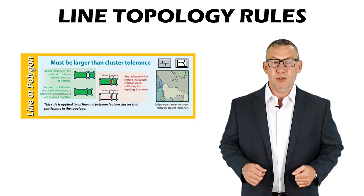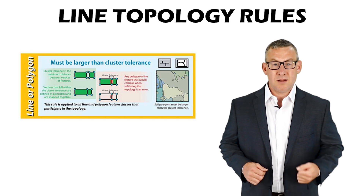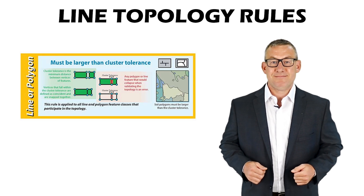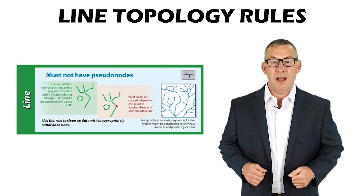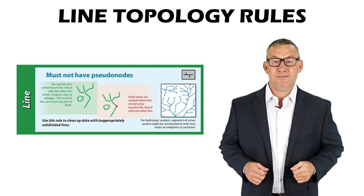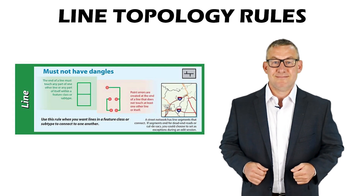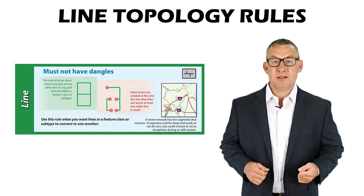Line topology rules include: Must Be Larger Than Cluster Tolerance — vertices that fall within the cluster tolerance are defined as coincident and snapped together. Must Not Have Pseudo Nodes — the end of a line cannot touch the end of only one other line; this rule is used in hydrologic analysis. Must Not Have Dangles — the end of a line must touch another line in its feature class or itself.